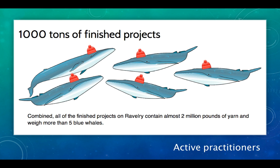The final characteristic is that members of a community of practice are active practitioners. This graphic shows that the members of Ravelry have completed 1,000 tons of projects. If that's not active practice, I don't know what is.